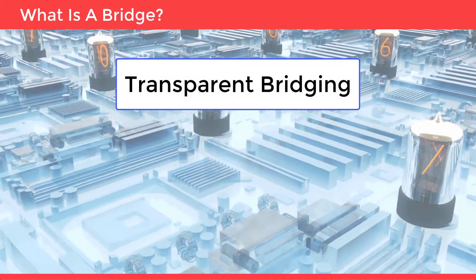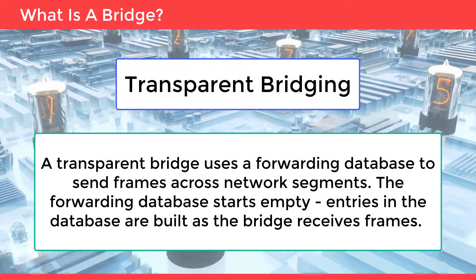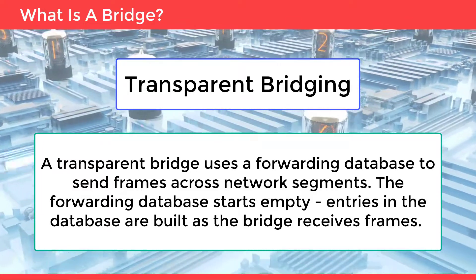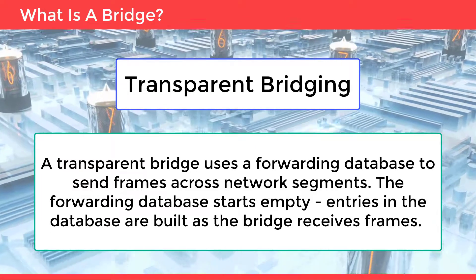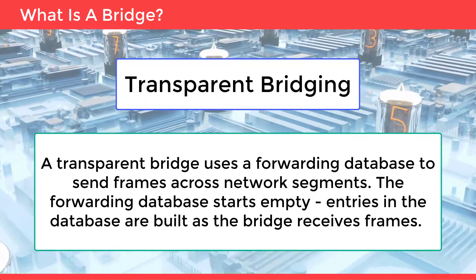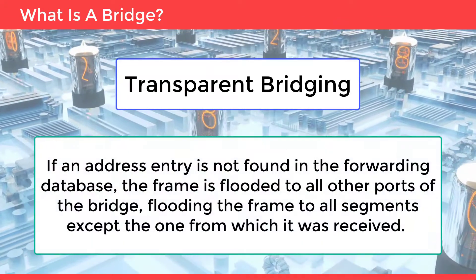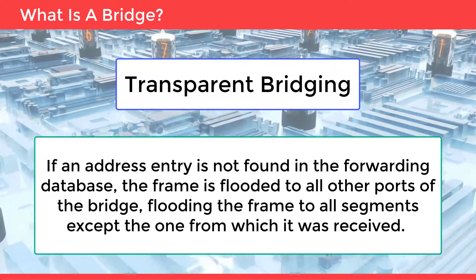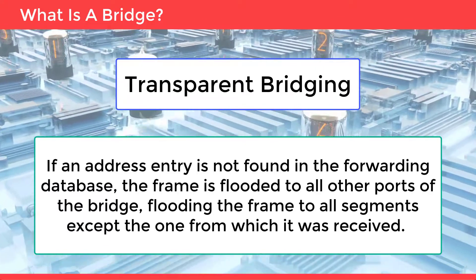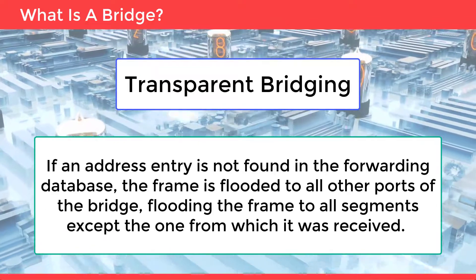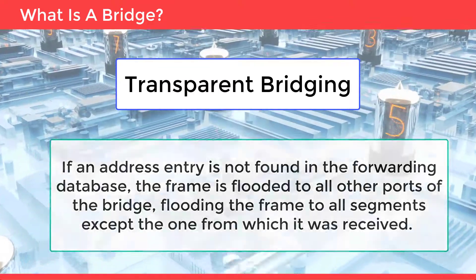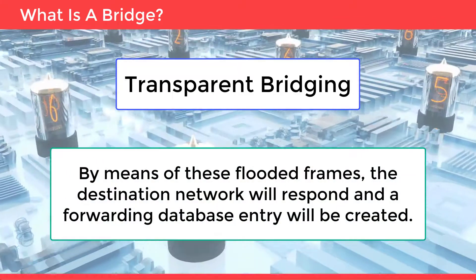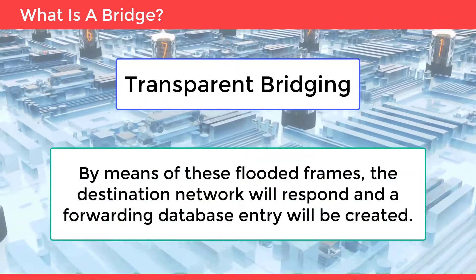Transparent bridging: a transparent bridge uses a forwarding database to send frames across network segments. The forwarding database starts empty; entries in the database are built as the bridge receives frames. If an address entry is not found in the forwarding database, the frame is flooded to all other ports of the bridge, flooding the frame to all segments except the one from which it was received. By means of these flooded frames, the destination network will respond and a forwarding database entry will be created.